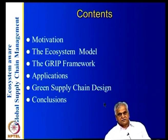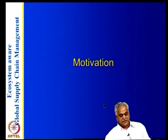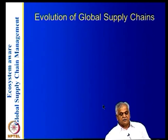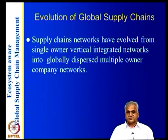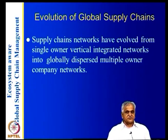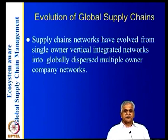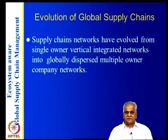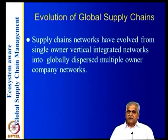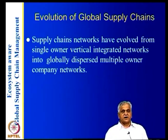The first lecture is on motivation — how global supply chains have evolved from single-owner, vertically integrated networks into globally dispersed, multiple-owner company networks. If you look at supply chains like what Henry Ford had in 1930, or later General Motors, Chrysler, IBM, and Intel — all big companies — they are basically vertically integrated, meaning there is only one owner, whether IBM, Intel, or GM.